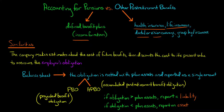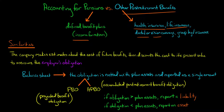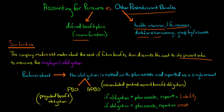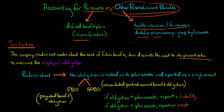In both cases — whether we're talking about a defined benefit pension plan where the retiree is going to be getting income, or we're talking about some kind of post-retirement benefit plan where they're going to get health insurance — in each case, the employer needs to make estimates about what is going to be the cost of those future benefits. Then they're going to discount that cost to the present value to measure the employer's obligation.